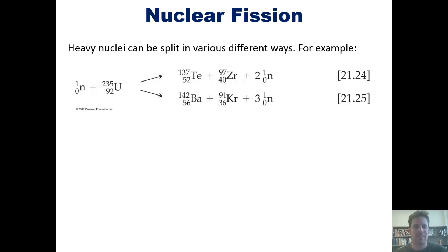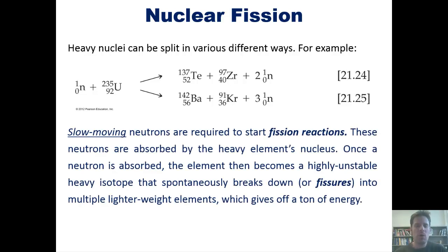Slow-moving neutrons are required to start these fission reactions. These neutrons are absorbed by the heavy element's nucleus. Once that neutron is absorbed, the element becomes a highly unstable heavy isotope that spontaneously breaks down, or fissures, into multiple lighter-weight elements, as shown here, which gives off a ton of energy.